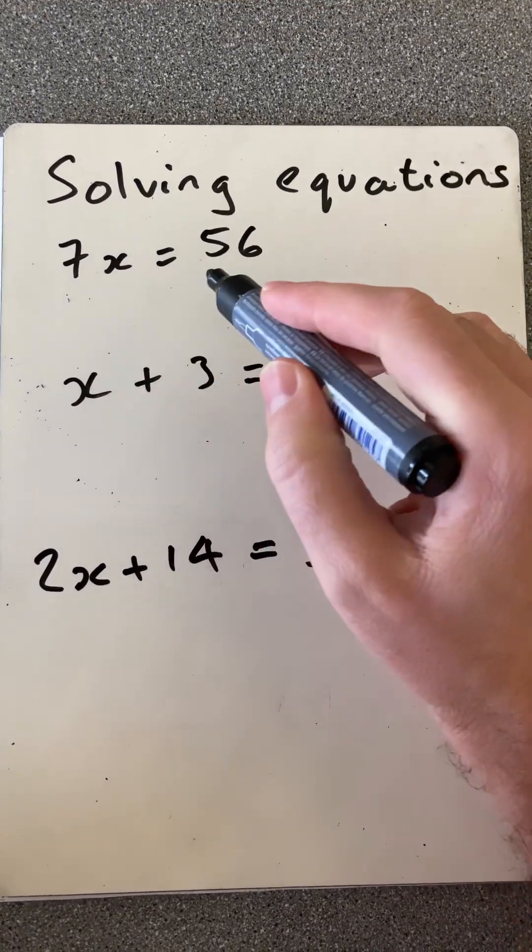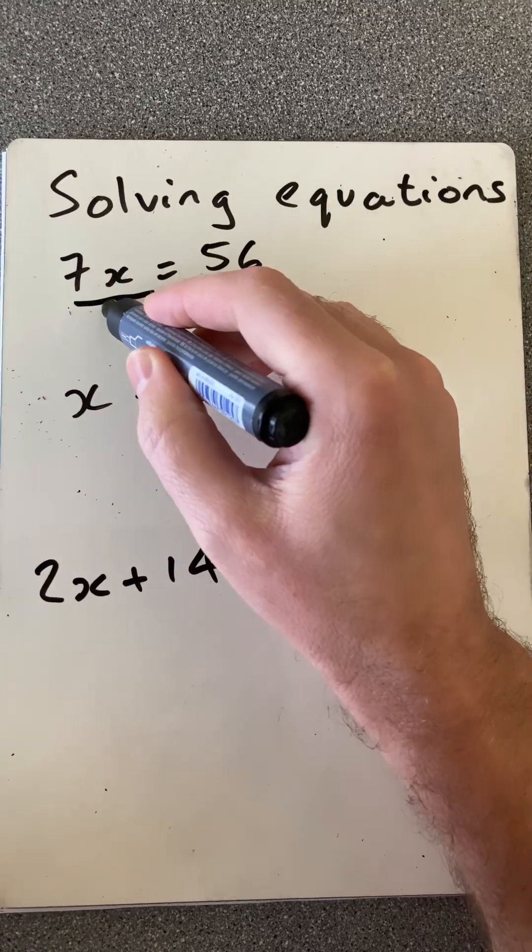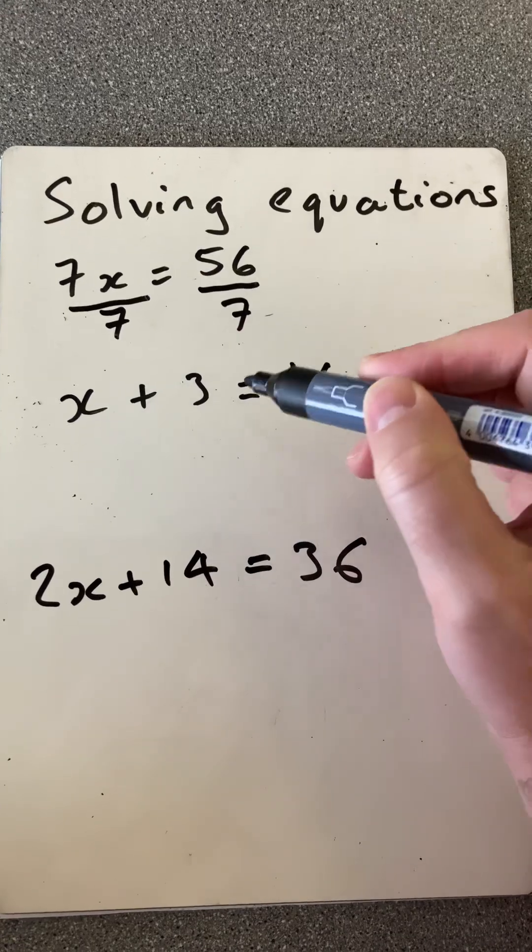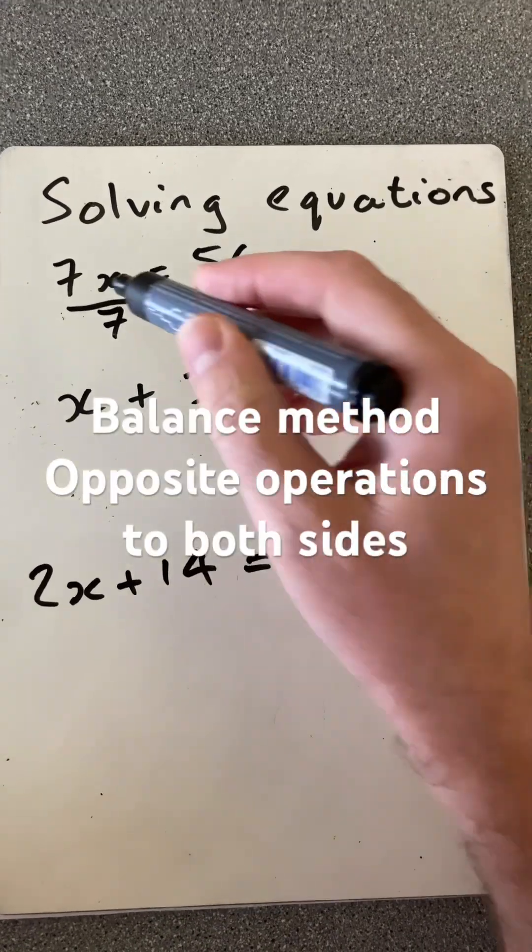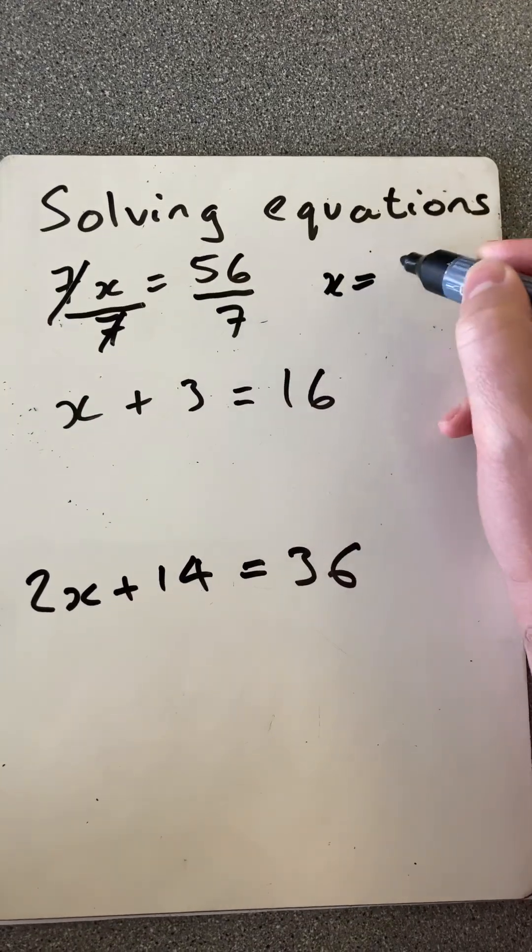I have 7x equals 56, so the easiest thing to do here is divide by 7. What you do to one side, you must do to the other. The balance method of using opposite operations, so then I can isolate that, and I see that x will equal 8.